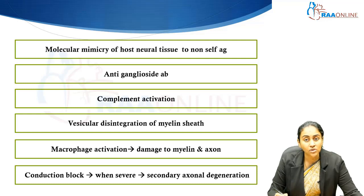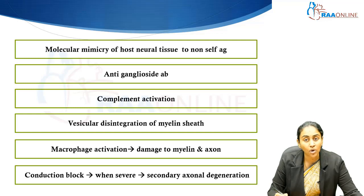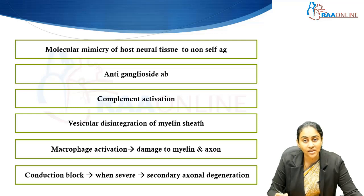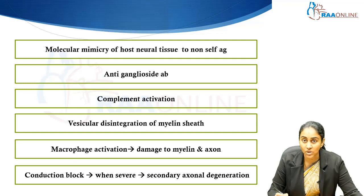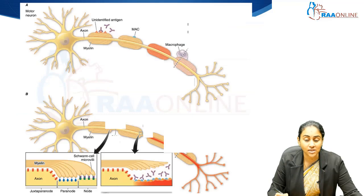This all results in conduction block, and as this conduction block becomes more and more persistent and severe with ongoing damage, there is going to be secondary axonal degeneration. This is how the course of events takes place in GBS.